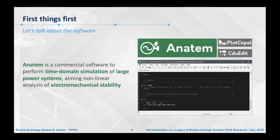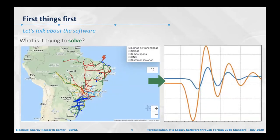ANATAIN is a commercial software to perform time domain simulation of large power systems and nonlinear analysis of electromechanical stability. It has a very simple text-based editor interface where you put data in fixed format, like code for Fortran. Imagine this is a map of the Brazilian power system at higher transmission level. If a lightning strike occurs in the north-eastern part of the country, I want to see how my state variables in the system are performing due to that event.